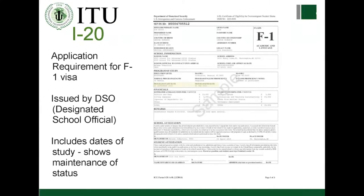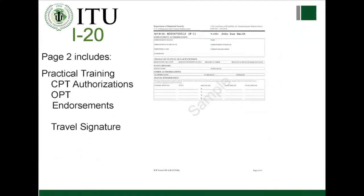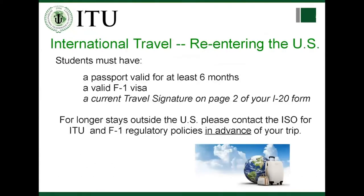If your I-20 end date is approaching and you're not close to graduation, email us as soon as possible because we may need to extend your I-20. The second page of the I-20 shows CPT authorization, OPT authorization, and travel endorsements. If you ever need to travel internationally and re-enter the U.S., you must have a valid passport for at least six months, a valid F1 visa, and a travel endorsement signed on page two of your I-20. Let us know at least a few weeks in advance.